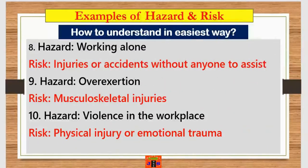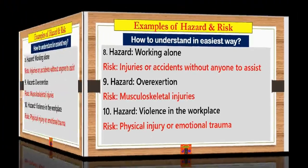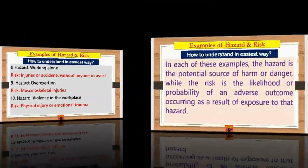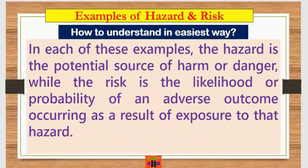After ten examples, the concept of hazard and risk should now be clear. The hazard is the potential to cause harm, while the outcome or result is the risk. For instance, a snake is a hazard and a snake bite is the risk. In each of these examples, the hazard is the potential source of harm or danger, while the risk is the likelihood or probability of an adverse outcome occurring as a result of exposure to that hazard. This concludes the short training session on the relationship between hazards and risk.